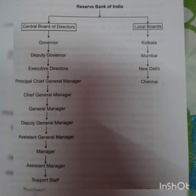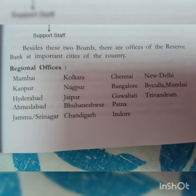The governor is also assisted by four deputy governors and four executive directors. They are not members of the central board but attend board meetings. Apart from the central board of directors, there are also four local boards which represent each area of the country.